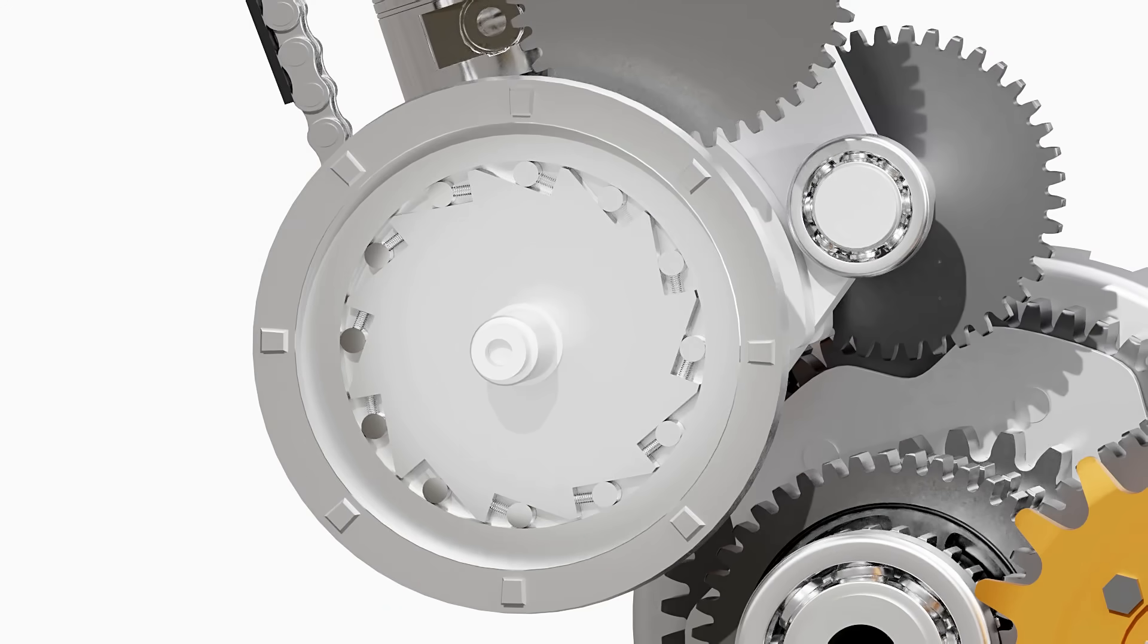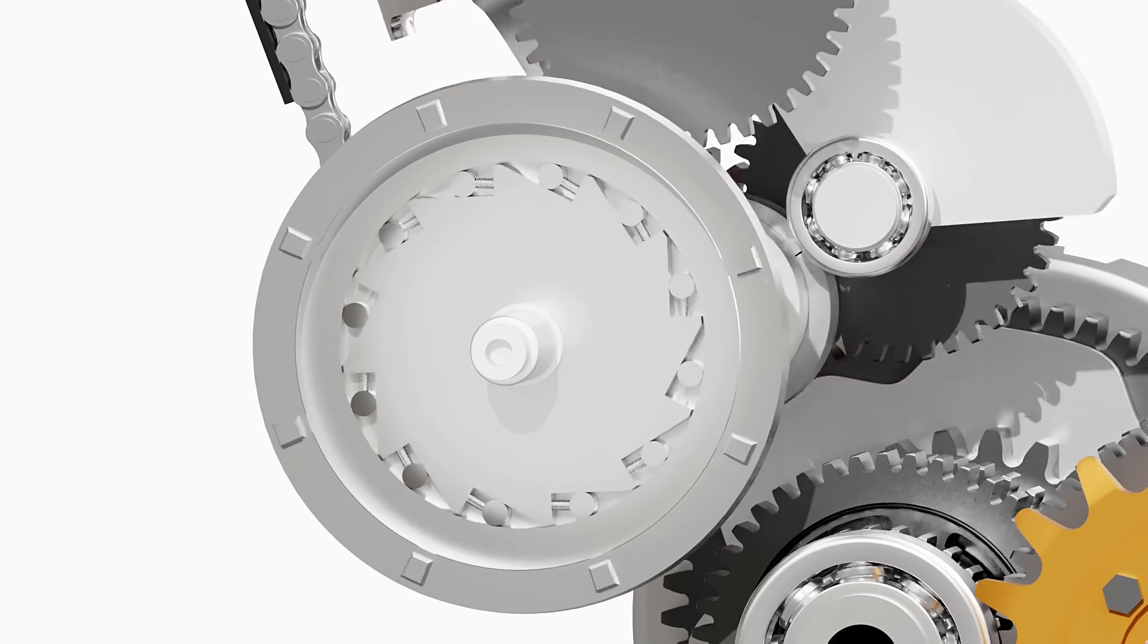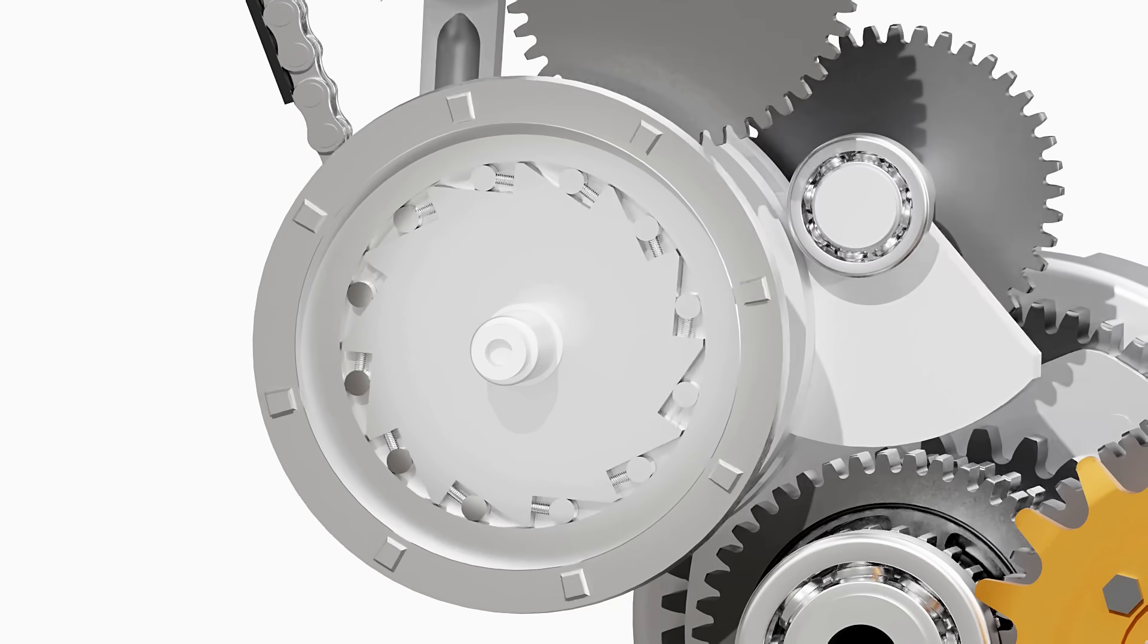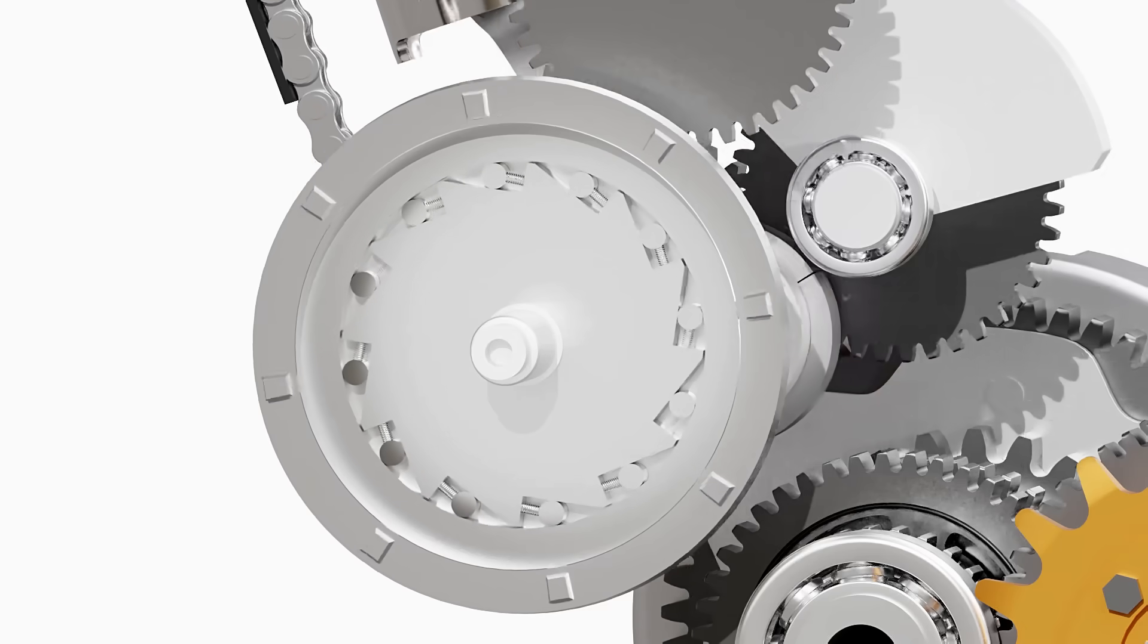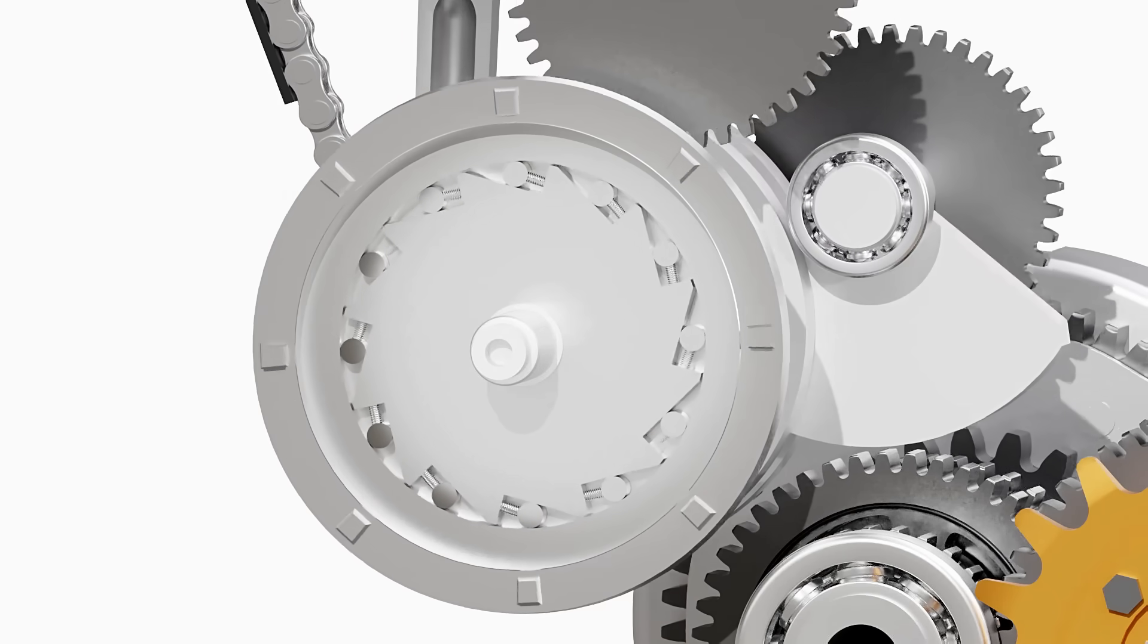The model shown here is of a roller-type one-way clutch. It has an outer race and an inner race with small rollers. As the starter motor spins the outer race in one direction, the rollers get trapped between the surfaces and the power is transferred to the inner race and thus to the crankshaft.